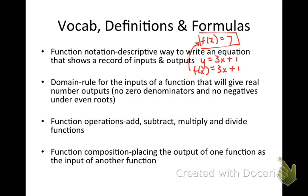Next definition: domain. Remember that domain is a rule for the inputs of a function that will give real number outputs. The two things we want to be on the lookout for: we don't want any x values that will give us 0 in a denominator, and we don't want any x values that will give us negatives under even roots, like the square root of negative 3, because that is a non-real number. We need real numbers.